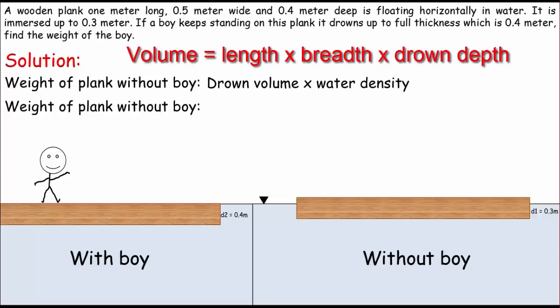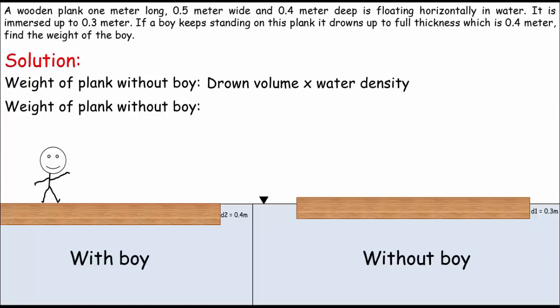So the weight of plank without the boy equals the drown volume of plank, which is going to be the length times breadth times the drown depth of the plank. Or you can say the length, if you see that, is 1 meter times 0.5, which is the breadth, times 0.3, which is the drown depth of the plank.